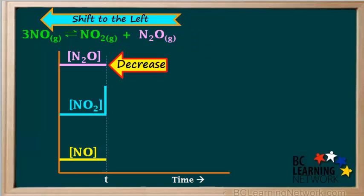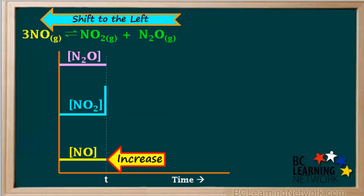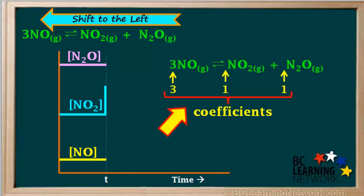Because NO₂ is a product, a shift to the left will cause its concentration to decrease. N₂O is also a product, so its concentration will also decrease. Because NO is a reactant, its concentration will increase as the equilibrium shifts to the left. Stoichiometry predicts that the relative concentration changes of the gases during the shift are governed by the ratios of coefficients in the balanced equation.